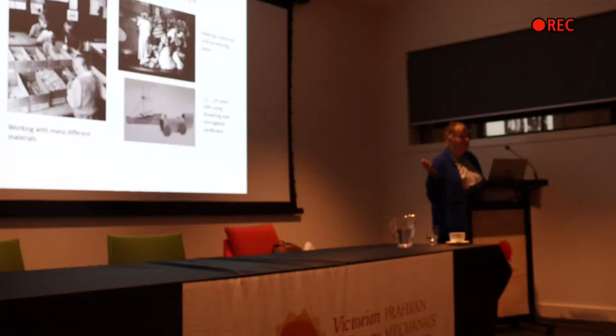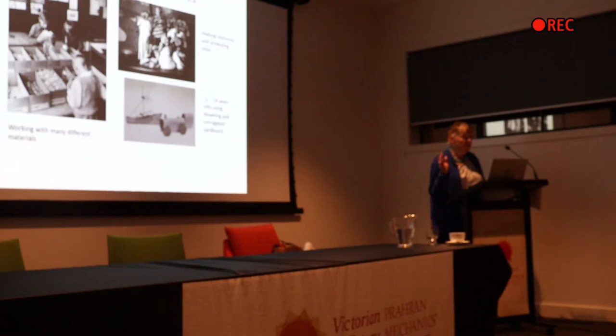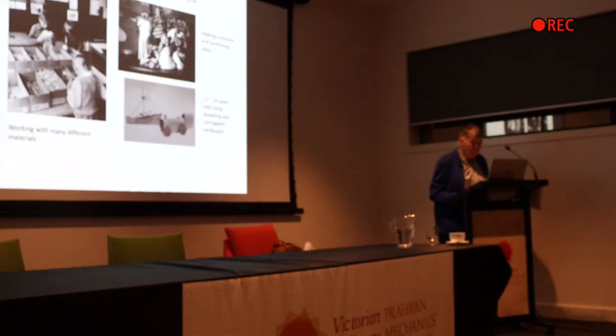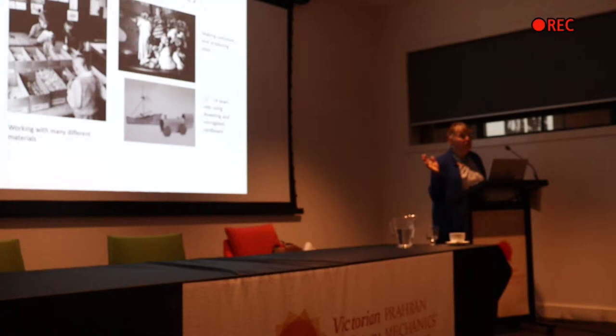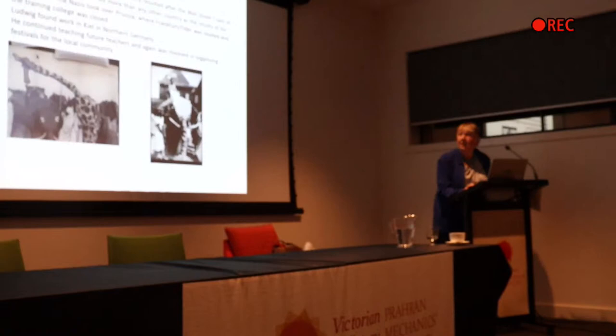This was all in Frankfurt an der Oder, which is now on the Polish border. There are two Frankfurts in Germany — Frankfurt am Main, where the main airport is, and Frankfurt an der Oder, just on the river Oder. But things got bad again with the Wall Street crash. After Germany had the hyperinflation, American banks had started lending German companies money, and when the Wall Street crash happened, they wanted all their money back, and things started to go down.